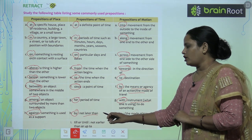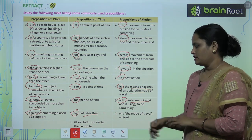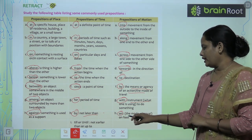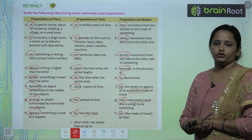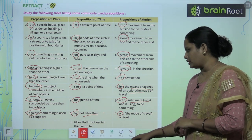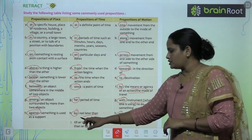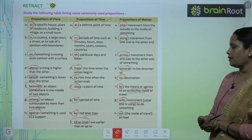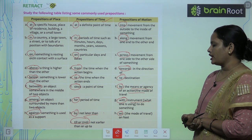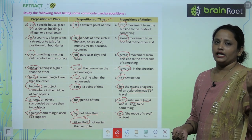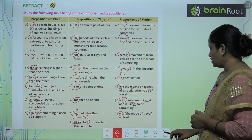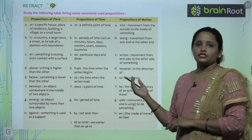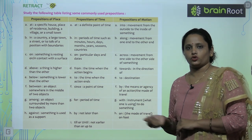'By' also means not later than. 'On' indicates the mode of travel on foot. 'Till' or 'until' — preposition of time — means not earlier than, or up to. So these were a few of the prepositions which tell us about preposition of place, time, and motion. You have to learn all of this.